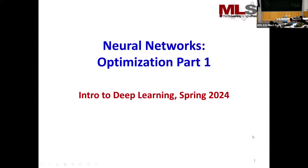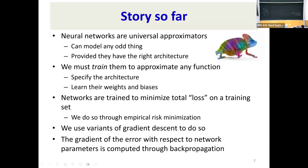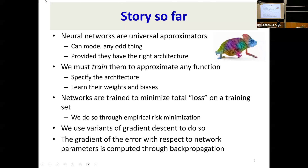It's a long class, so we have to be a bit quick. The story so far, what we've seen: neural networks are universal approximators. They can model any odd thing, provided they have the right architecture. But we must train them to approximate any function, which means we must specify the architecture and learn the weights and biases for the function we're trying to learn. They are trained to minimize the total loss on a training set. We're going to do this through empirical risk minimization.